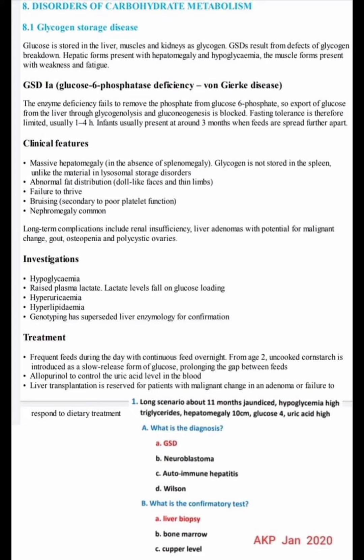Glycogen storage disease 1a, also known as glucose-6-phosphatase deficiency or Von Gierke disease, involves an enzyme deficiency that fails to remove the phosphate from glucose-6-phosphate, so export of glucose from the liver through glycogenolysis and gluconeogenesis is blocked. Fasting tolerance is therefore limited, usually 1 to 4 hours. Infants usually present at around 3 months when feeds are spread further apart.